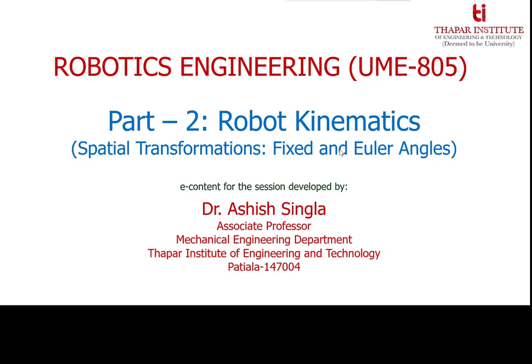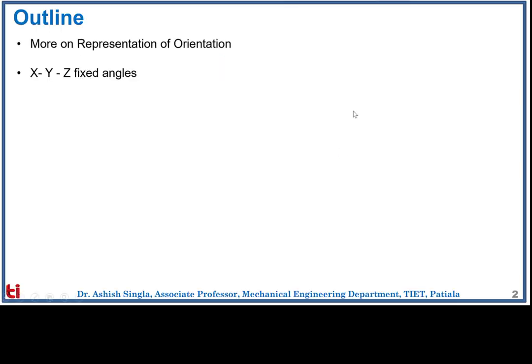In this session, we will discuss how to represent the body in an arbitrary direction. First, we will discuss more on representation of orientation. Then we will discuss the three rotations about fixed axes X, Y, and Z. Then we will talk about the three rotations about the moving frame, which are called Euler angles, and understand the relationship and difference between rotations about the fixed axis and rotations about the moving axis.